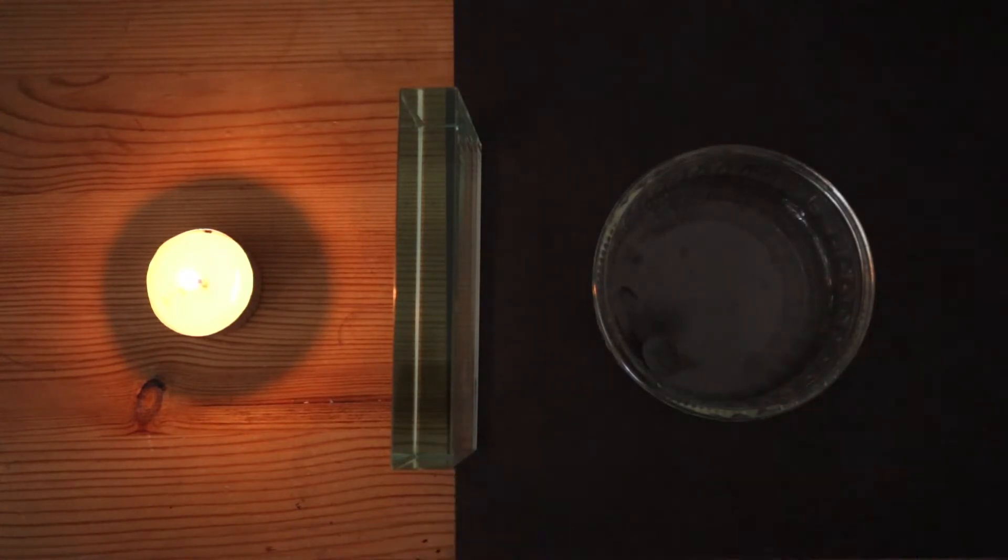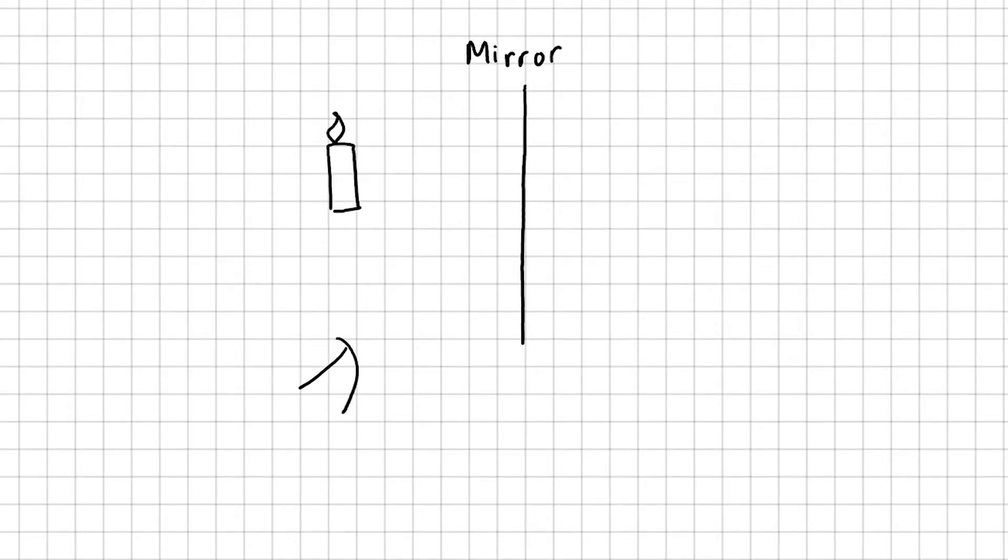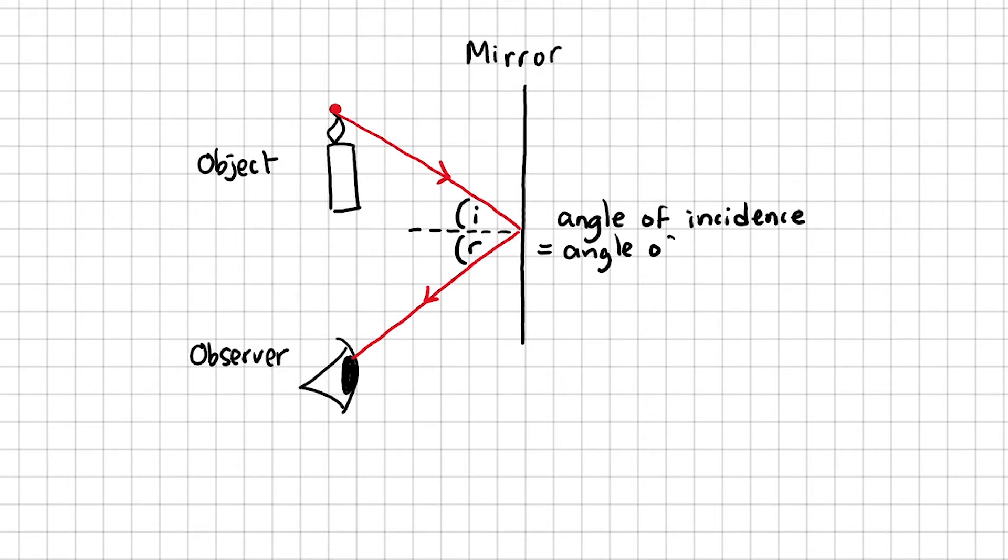Let's have a look at how we can draw a ray diagram for an object in front of the mirror. Taking the top of the candle's flame, I'm going to draw a ray of light reflected into the observer's eye. Remember the angle of incidence is always the same as the angle of reflection.